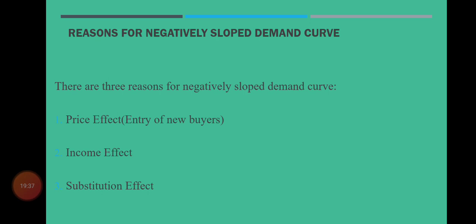اس طرح ہم نے law of demand study کیا۔ Next lecture میں ہم دیکھیں گے کہ وہ کون سے factors ہیں — جو کہ آج ہم نے law of demand بیان کرتے ہوئے 'other things remaining the same' کہا — یہ law of demand کی کون سی assumptions ہیں، وہ کون سے factors ہیں جو as such رہیں تو یہ قانون صحیح ثابت ہوگا۔ اس کے علاوہ ہم وہ factors بھی study کریں گے جن پر law of demand apply نہیں ہوتا۔